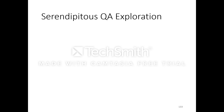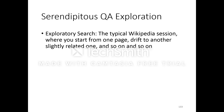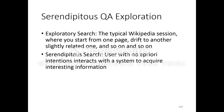Another area could be serendipitous QA exploration. Exploratory search is what we do in a typical Wikipedia session — you start with one page, drift to a slightly related one, and after 10 or 20 clicks you may have reached an area of the knowledge base very different from where you started. Serendipitous search is a search by a user with no a priori intentions, who is interacting with the system to acquire interesting information.